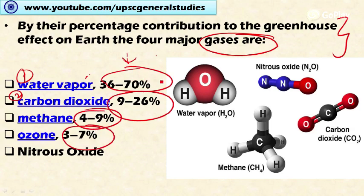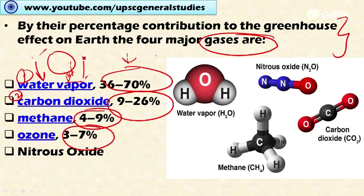Water vapor accounts for 36 to 70% of the warming of the Earth, but this is not a serious issue because water vapor is part of the water cycle — it is cycled back as rainfall and re-evaporated. Water vapor is a short-term phenomenon, lasting only three to seven days in the atmosphere. The major threat to global warming is carbon dioxide and other gases like methane and nitrous oxide.